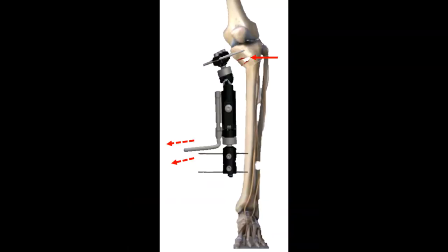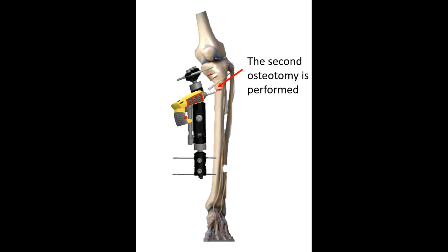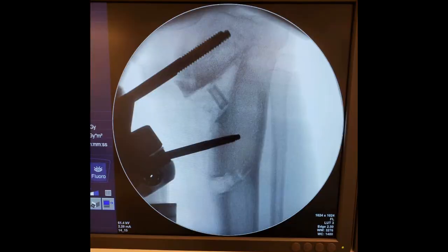Then the fibular bone graft is introduced. After this step, we place the accessory pin in the anterior plane, distal to the first osteotomy, and 3 cm distal to it. We perform the second osteotomy from medial to lateral, keeping the lateral cortex integral.